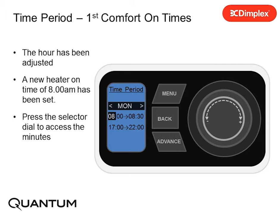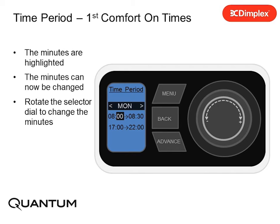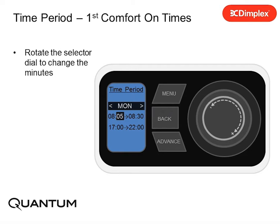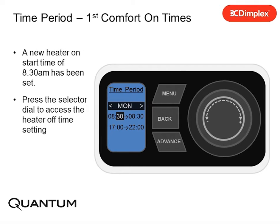Press the selector dial to access the minutes. The minutes are highlighted and can now be changed. Rotate the selector dial to change the minutes. A new heater on start time of 8:30am has been set.